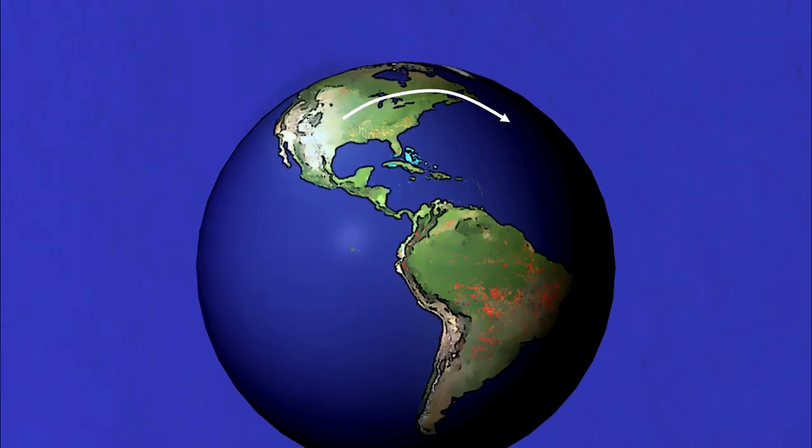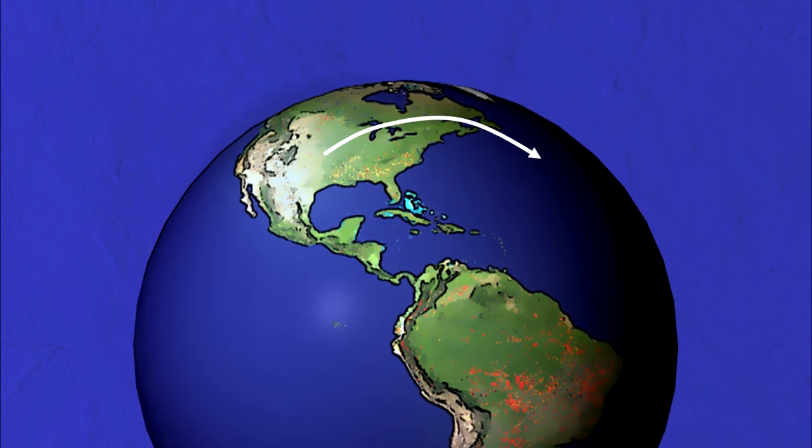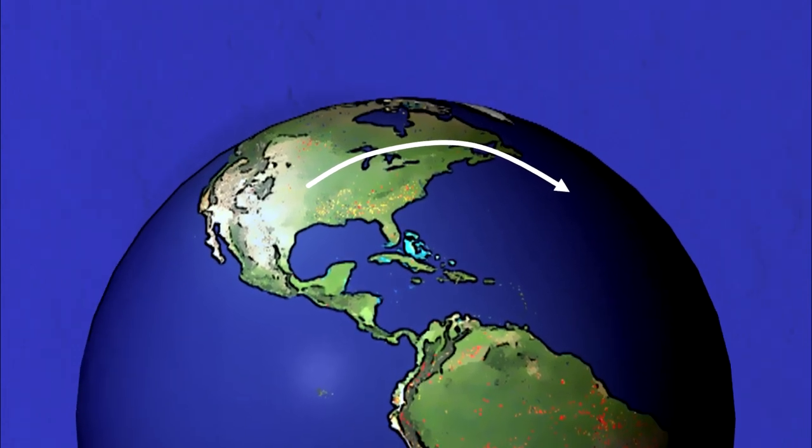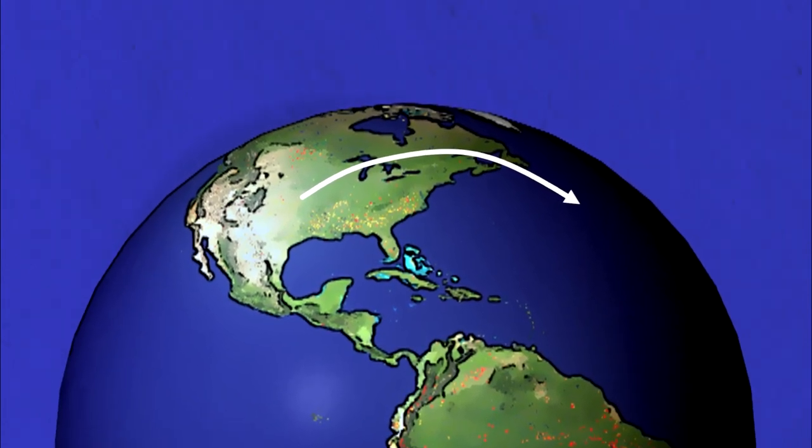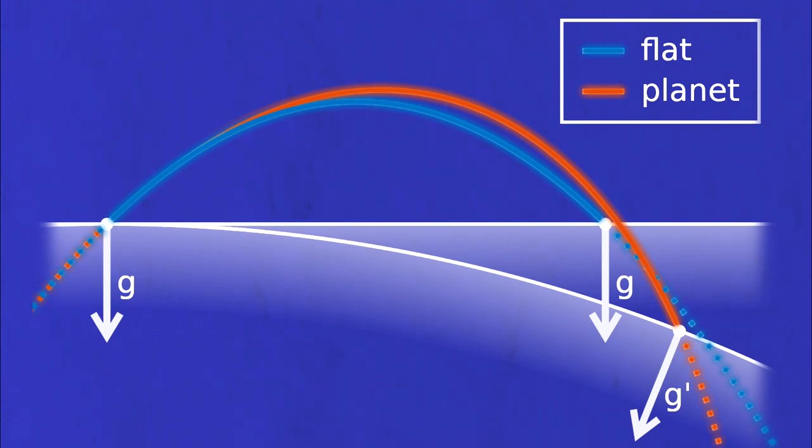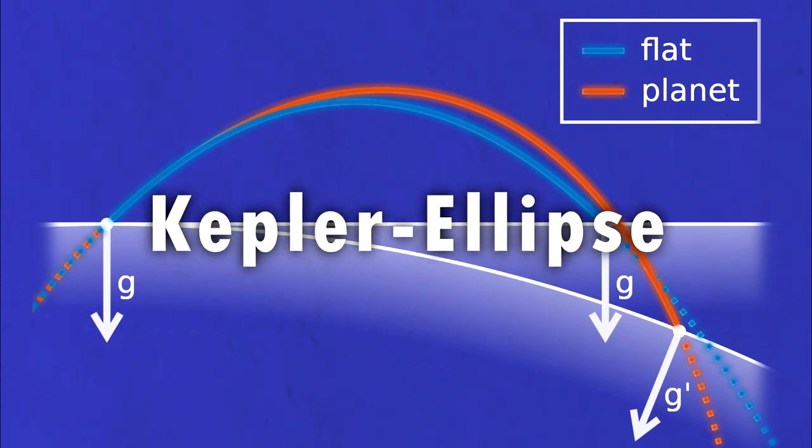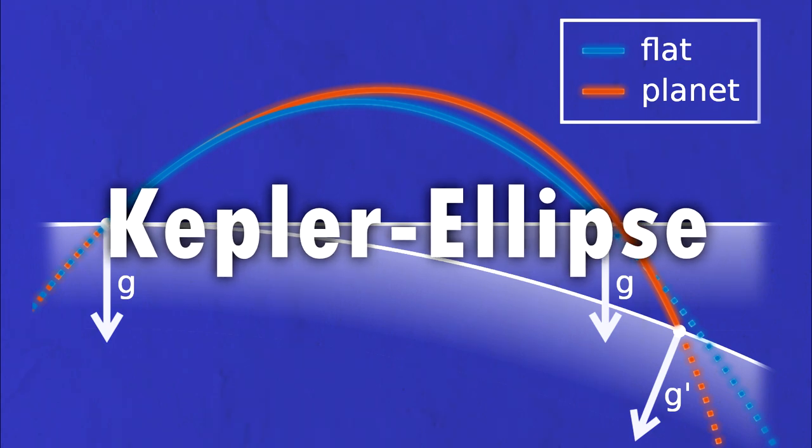Just as a fun thought experiment, what if you had quite the throwing arm and could lob objects on a planetary scale? Considering a parabola fails to account for the fact that the incidence angle of gravity changes on the object over time, the only way to get the right answer is with a Kepler ellipse with a focal point at the center of Earth.